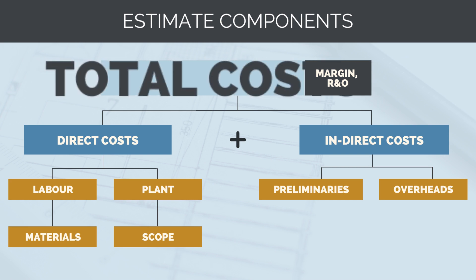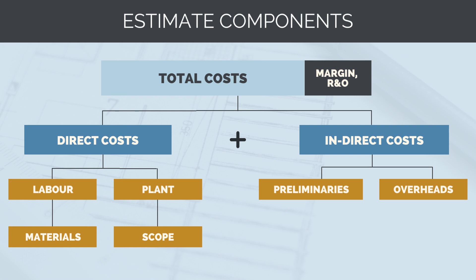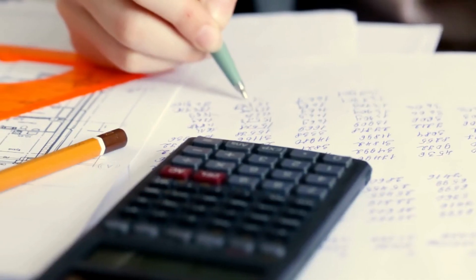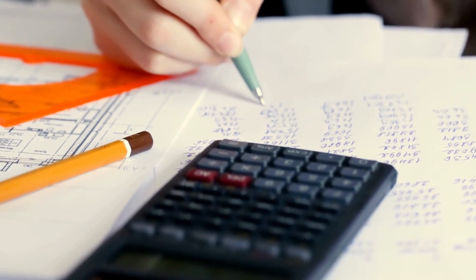Our total project costs are a combination of our direct and indirect costs. To our total project costs, we need to factor in some contingency — referred to as our risk and opportunity — which accounts for any uncertainties in our pricing. And finally, we can then add our profit margin.